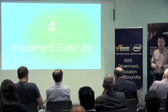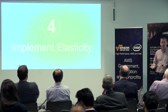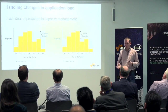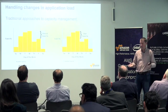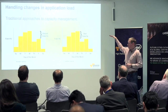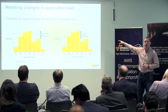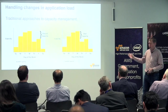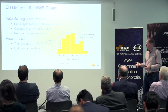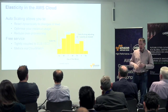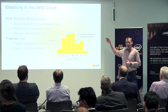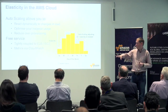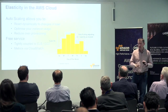Number four, elasticity — this is often the benefit talked about most within AWS, because it's easy to translate into genuine savings. Traditionally when designing infrastructure on-premises you have to make trade-offs: either provision for peak capacity and have a lot sat around doing nothing, or provision for average capacity and struggle when demand spikes. With AWS you don't have to make that trade-off. We have services such as auto-scaling that allows you to react dynamically to changes in load — automatically adding capacity as load goes up and reducing it again as load goes down. This is a free service, part of the EC2 management tools.